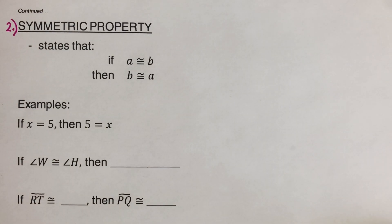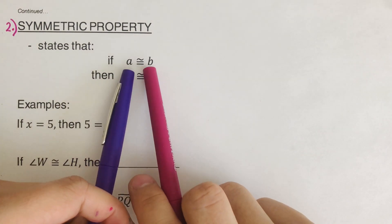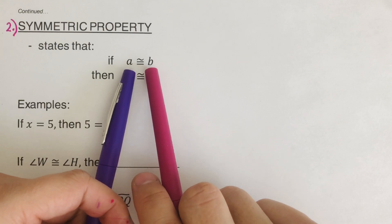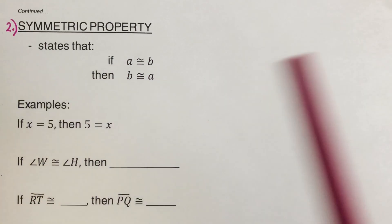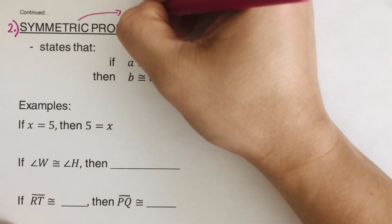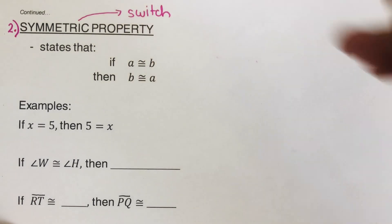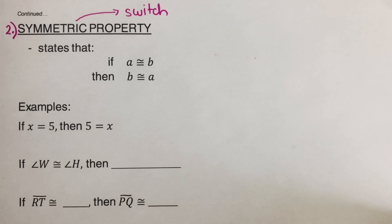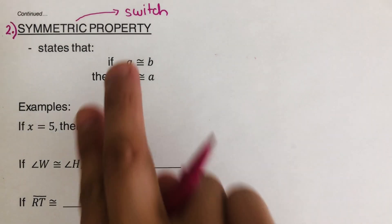Symmetric property. So this symmetric property states that if A is congruent to B, then B is congruent to A. So what's going on? If A is congruent to B, switch it. B is congruent to A. So pretty much symmetric means we switch it. So we're going to switch them around. So if I have A is equal to B, I switch it around. B is congruent to A. So I switched it.